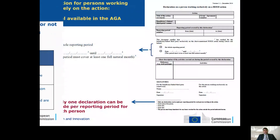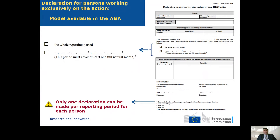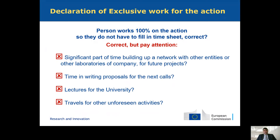This is an example of how the declaration of exclusive work looks — similar to a timesheet but without the hours detail per day or per month. This is very important: some beneficiaries interpreted it as applicable to anyone not working on other actions, but this is incorrect. The correct interpretation is that they must have no other activities at all. Be careful — if there is evidence of lectures, unforeseen travels, writing proposals, or doing other work not declared on another project, this is very important to bear in mind.